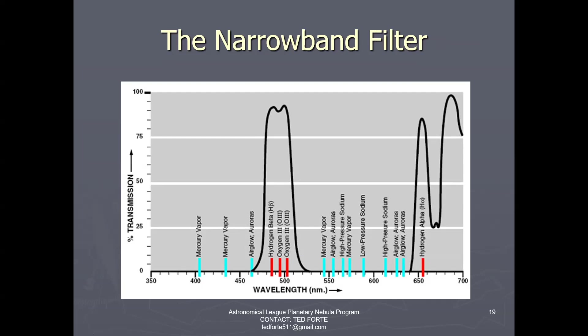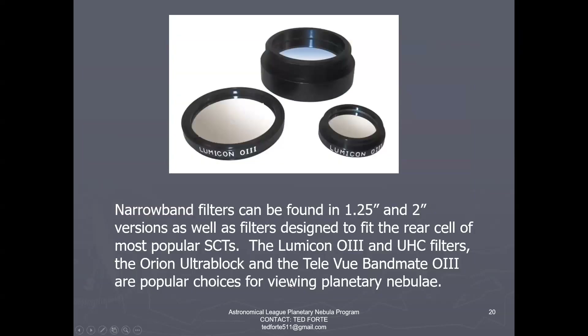These filters come in various sizes — you can get one to fit the rear cell of your SCT, a two-inch version, or an inch-and-a-quarter version. Several manufacturers make them: I'm showing you the Lumicon one here, but Televue makes them, Baader makes them, and several others. Unfortunately Orion Telescope has recently gone out of business, but if you have their Ultra Block filter, that's a really effective filter for objects that have a strong O3 line and performs quite well — if you can get hold of one, I would keep it.